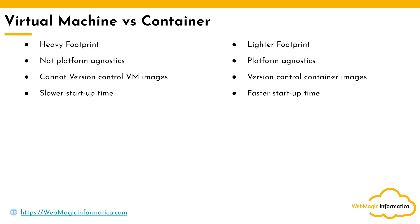Containers are created from a configuration file that has all details — which runtime version, which application version — and this file is a text file you can version-control in any source code management tool like Git or TFS. VMs have a slower startup time because you need to boot the OS first, then the runtime, then the application. Containers have a very fast startup time — a container can be running in just a few seconds.